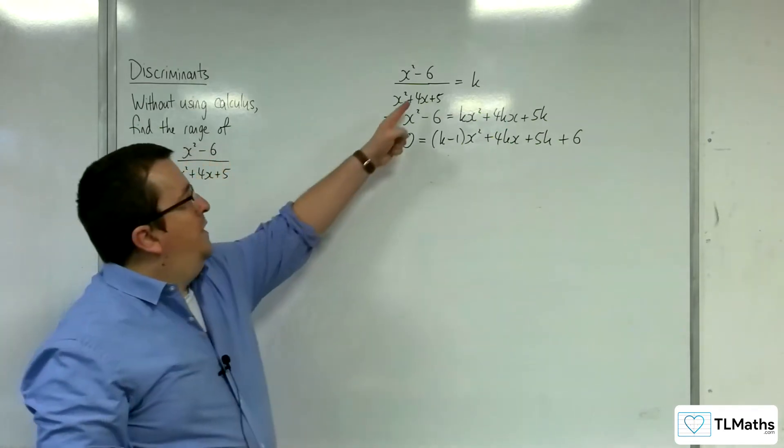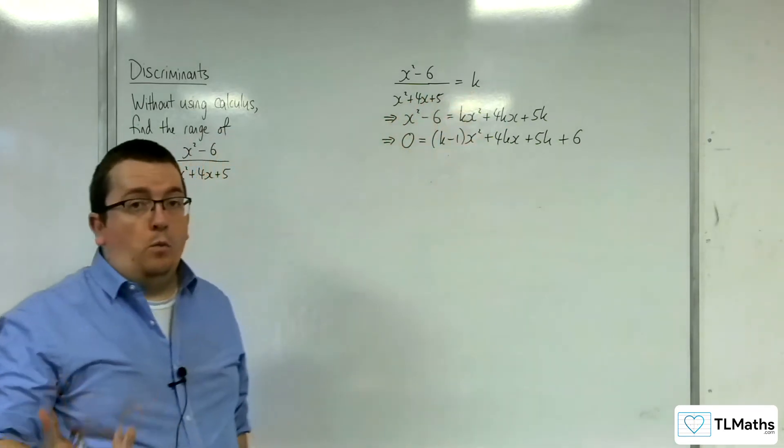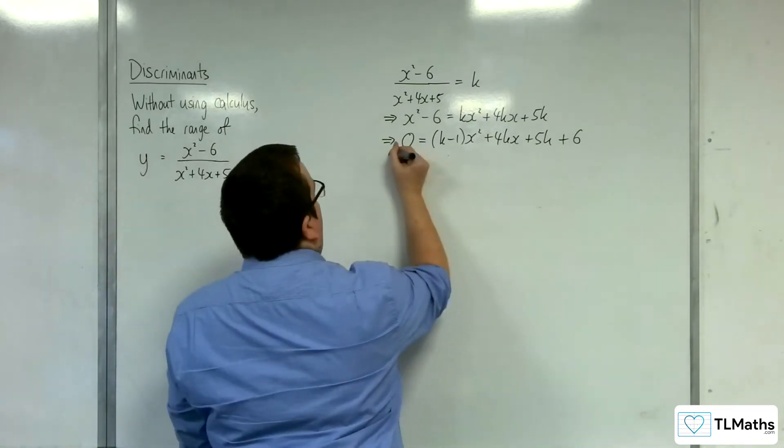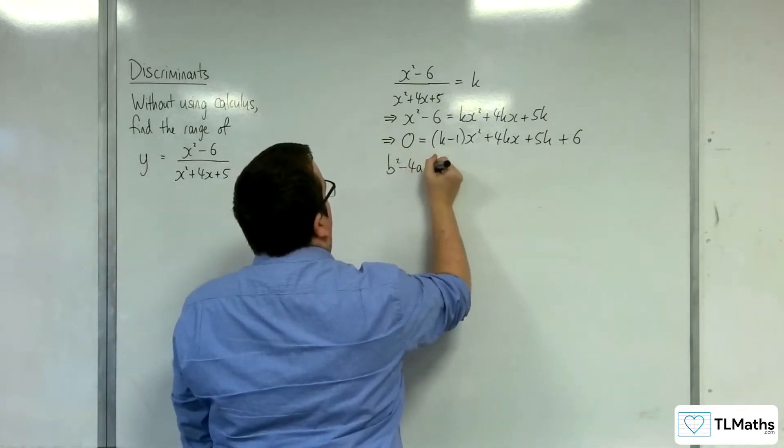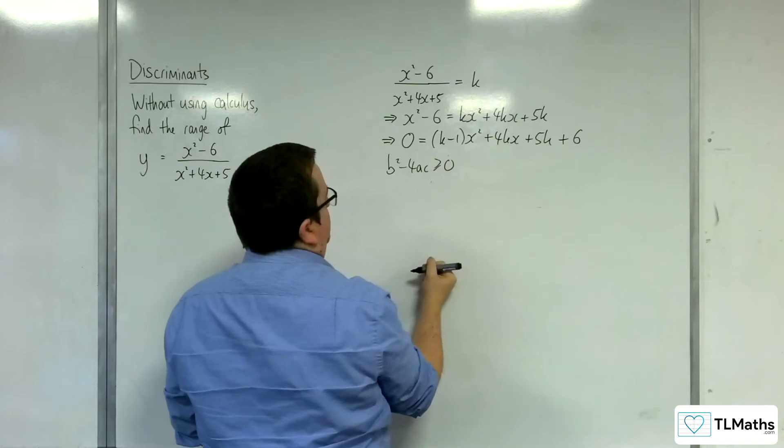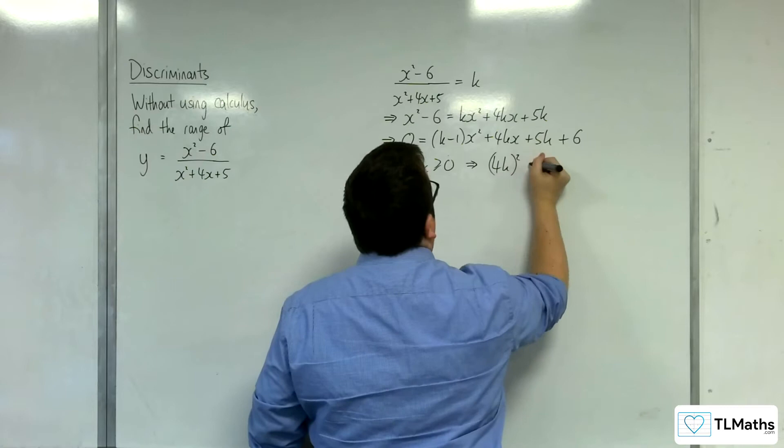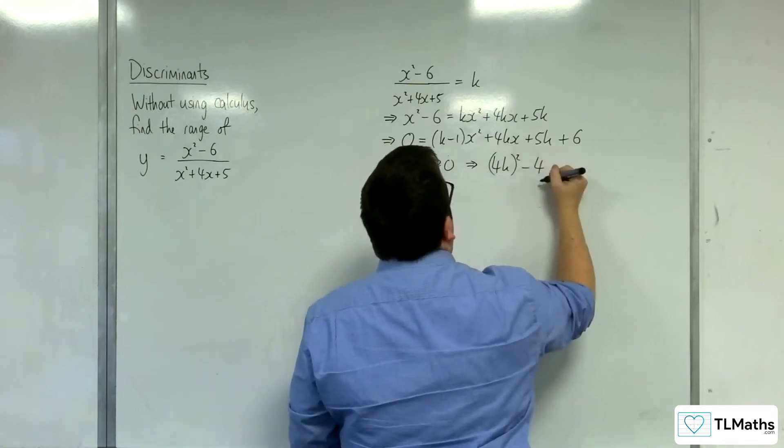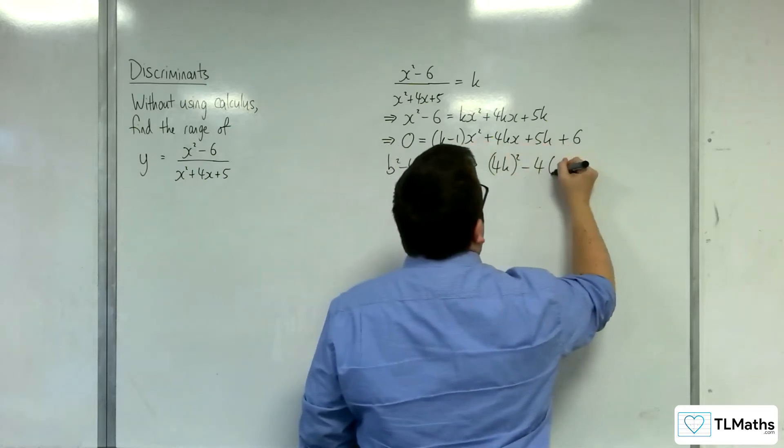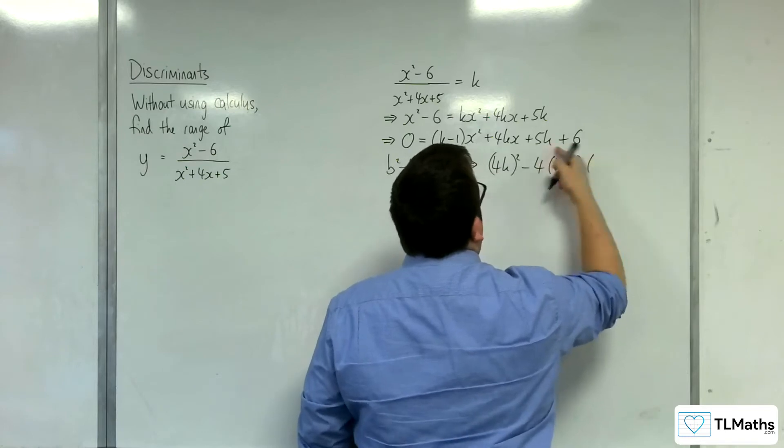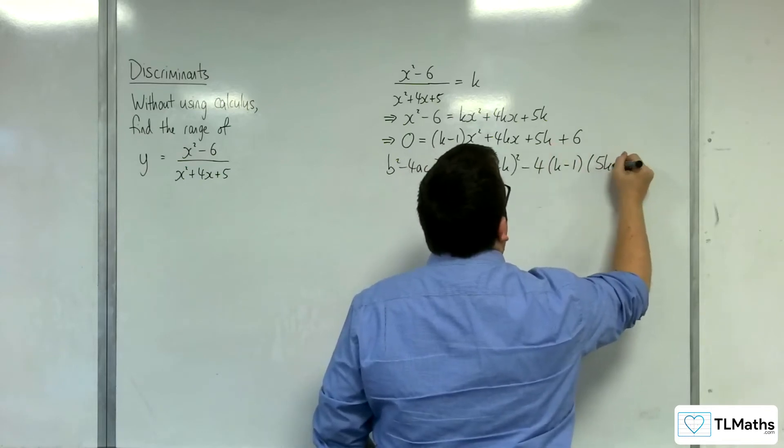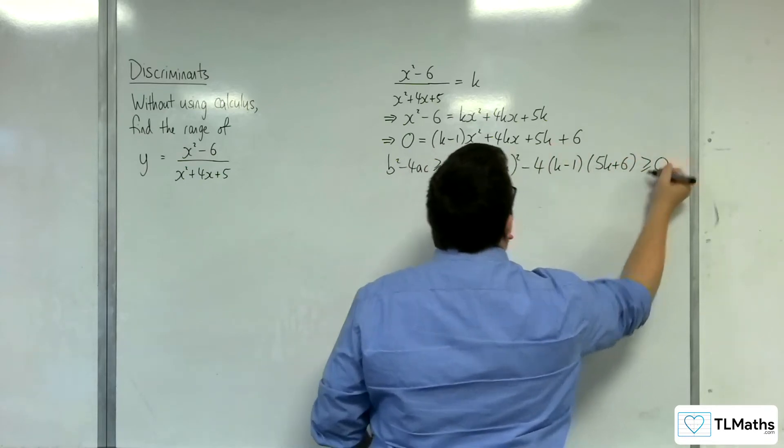So in order for this curve to intersect y equals k, I'm going to need the discriminant to be greater than or equal to 0. So that implies that we're going to have 4k all squared take away 4 lots of a times c, which is the 5k plus 6, and that's greater than or equal to 0.